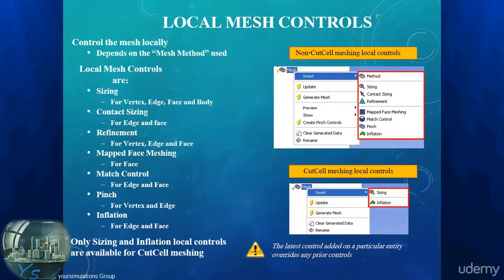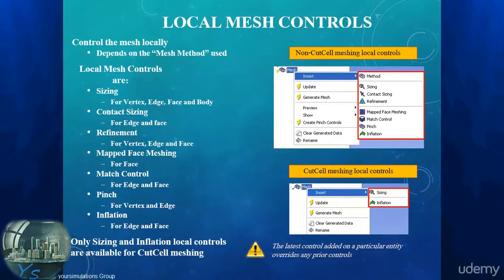Refinement acts on the already existing mesh size and reduces the element size by simply splitting the elements. It can be used for vertices, edges, or faces. Refinement is rarely used for CFD meshes and therefore not discussed in this lecture.